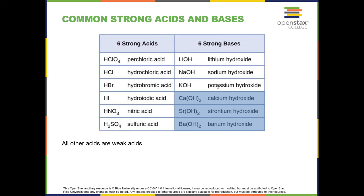The Group 2A bases — calcium, strontium, and barium — are highlighted because they aren't quite as soluble in water as the Group 1A metals. They do completely dissociate in water, but they're somewhat less soluble. Also note that if you search online you might find eight strong acids, because 'strong' is a relative term. For this course, these six are the ones you need to know. If an acid isn't on this list it's not a strong acid, and if a base isn't on this list it's not a strong base — said another way, it will be weak.